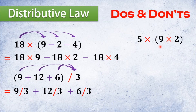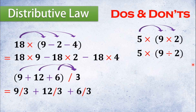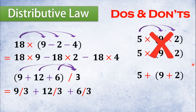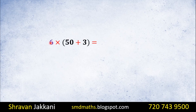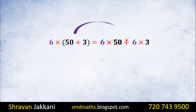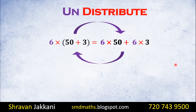Here we have 5 times of 9 times 2, or 5 times of 9 divided by 2. For example: 5 plus 9 plus 2, or 5 minus 9 plus 2, or 5 times 9 divided by 2. One way is to multiply using un-distribution or the merge, and the other way is simpler.